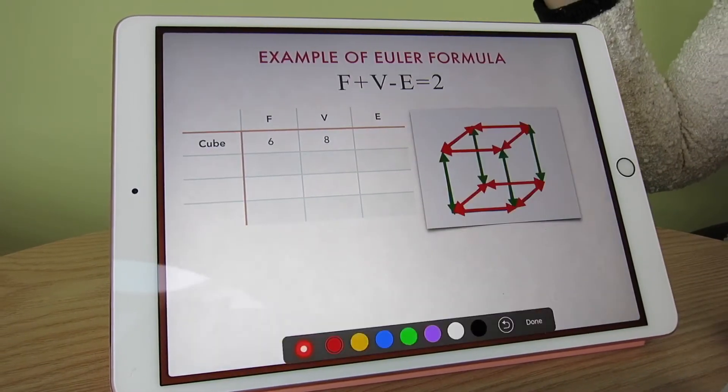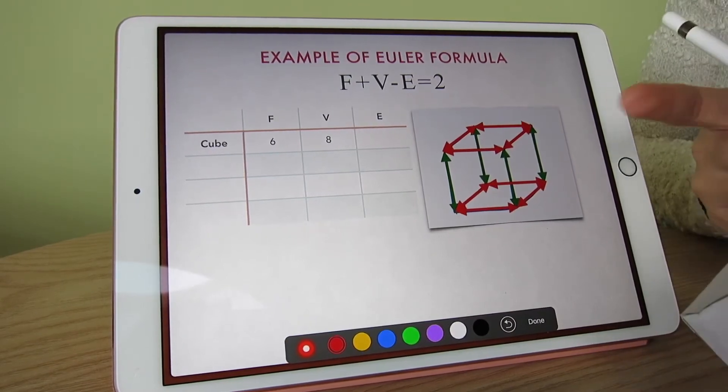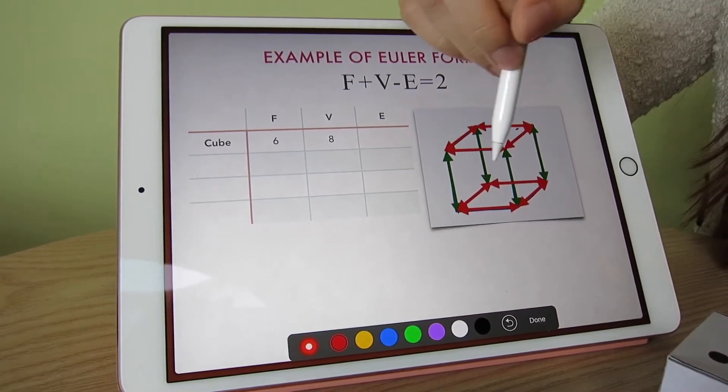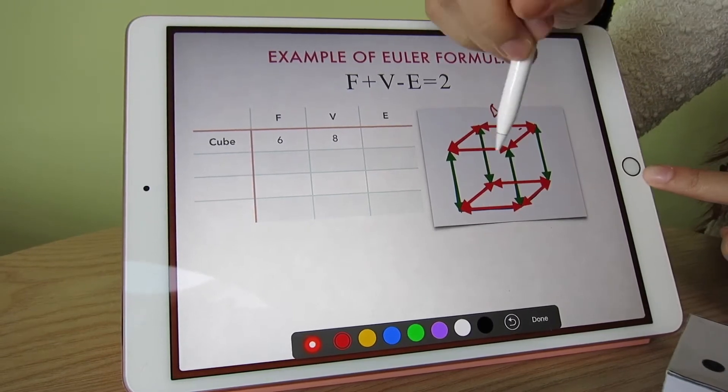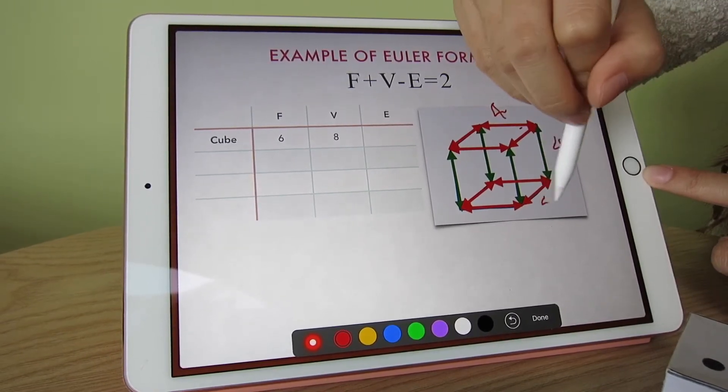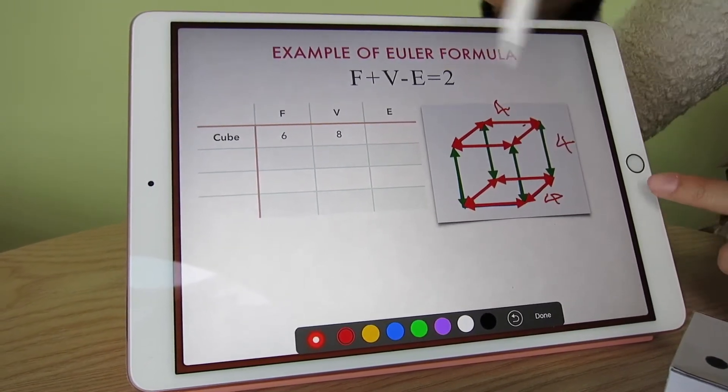What about the last one, edge? How can I form the cube by all those edges? I have 4 from the upper one, 4 more in the middle, and 4 more in the lower part. So add them all up—in total I will have 12 edges.